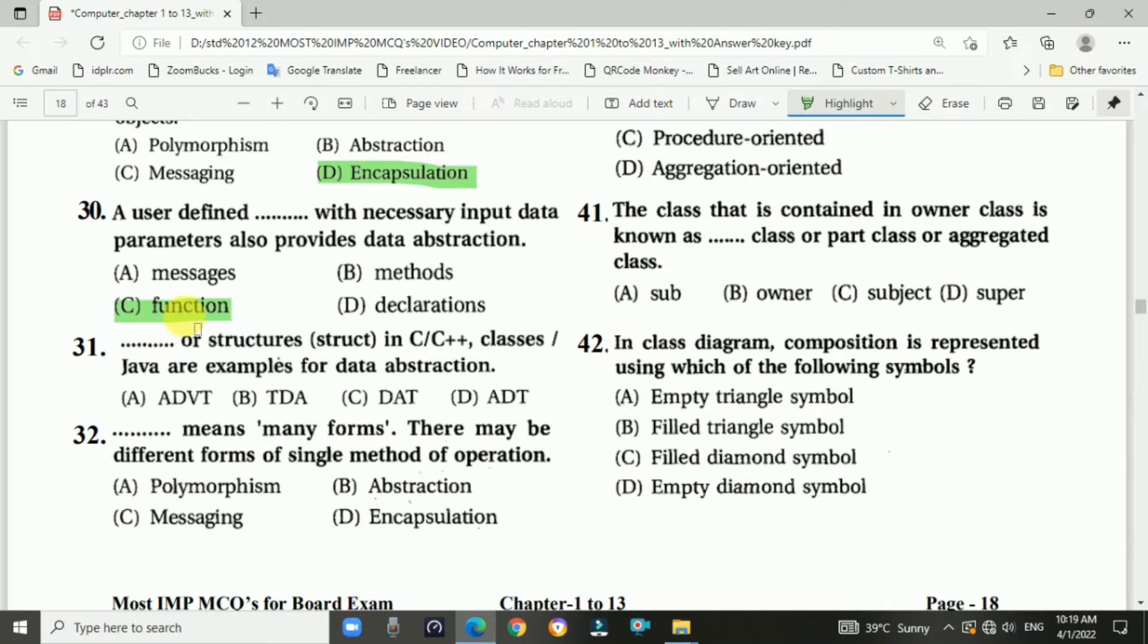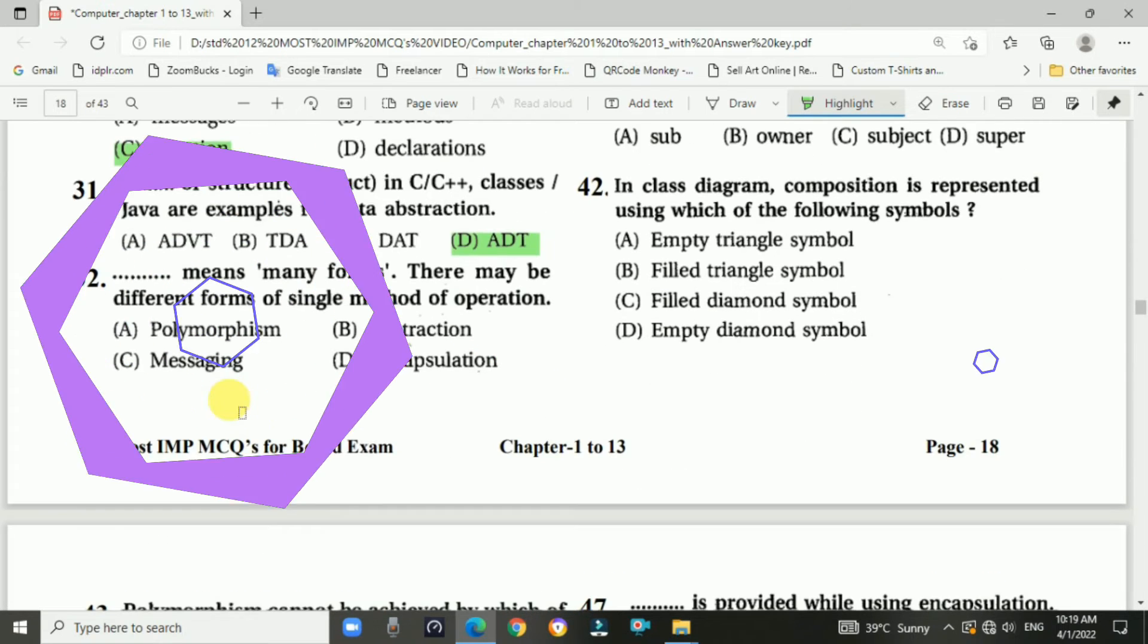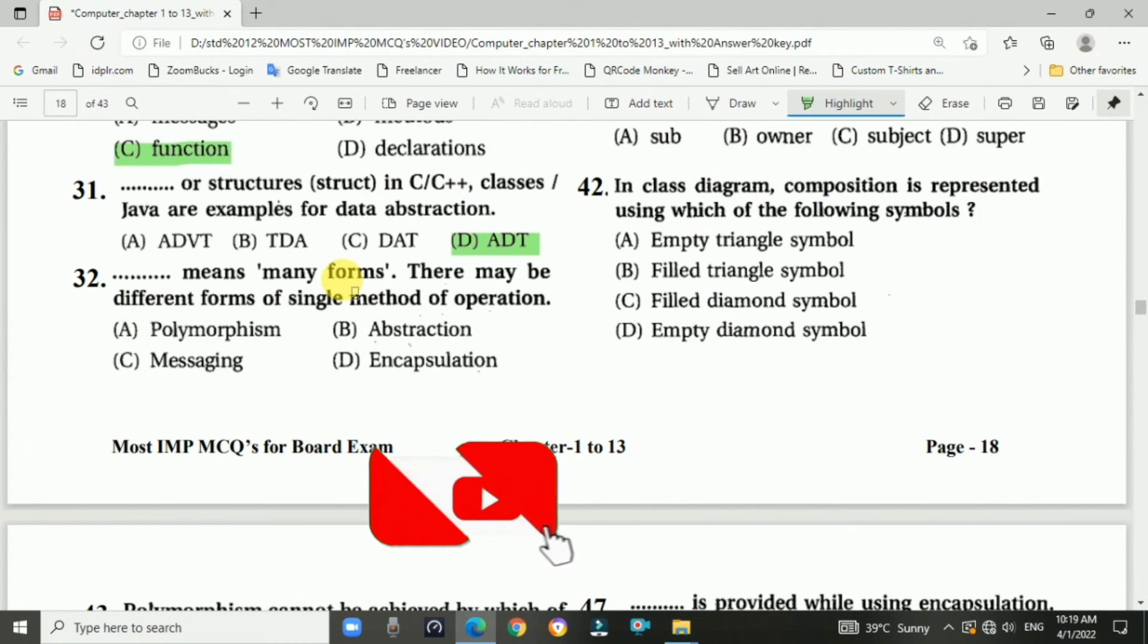Question number thirty-one: Blank or structure in C or C++ classes or Java are examples for data abstraction. Answer is D, ADT. Question number thirty-two: Blank means many forms. There are maybe different forms of a single method or operation. Answer is A, polymorphism.